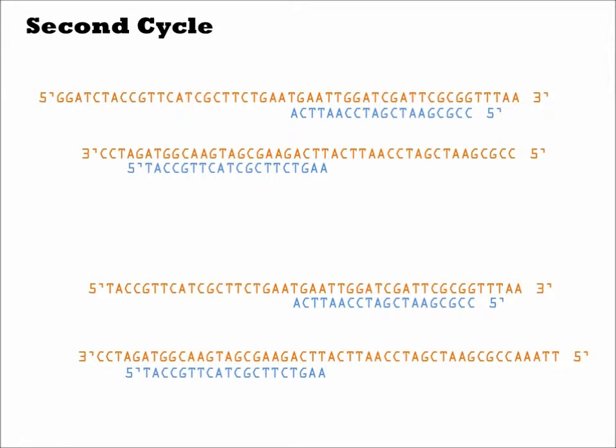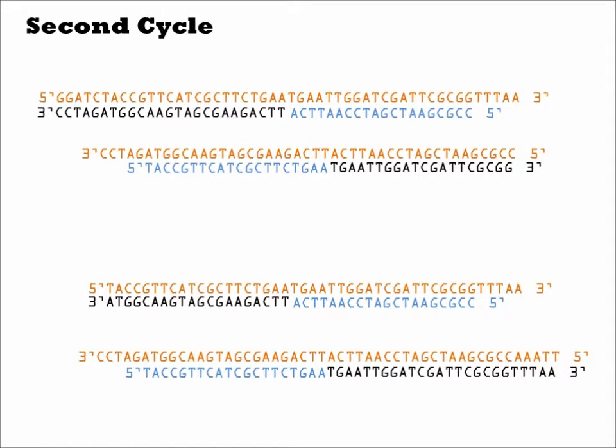In the second cycle, the same process occurs of denaturation, annealing, and extension of the DNA with polymerase.